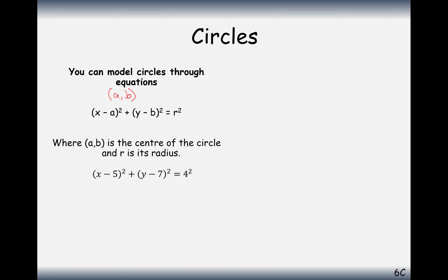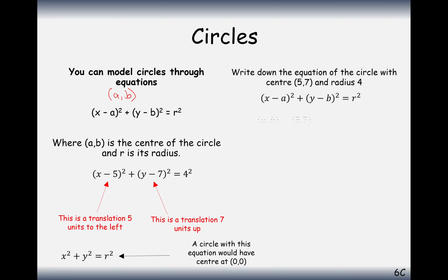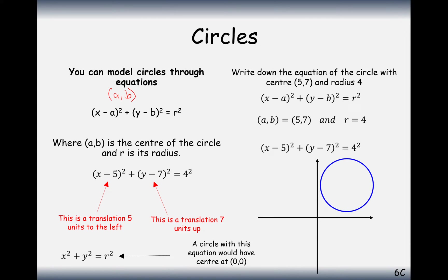For example, with this equation of a circle, from the value 5 we translate 5 units left, and on the y value we translate 7 units up. The center is at (5, 7) with a radius of 4, squared at the end. The diagram for this, with a center of 5, 7 and a radius of 4, looks something like this.